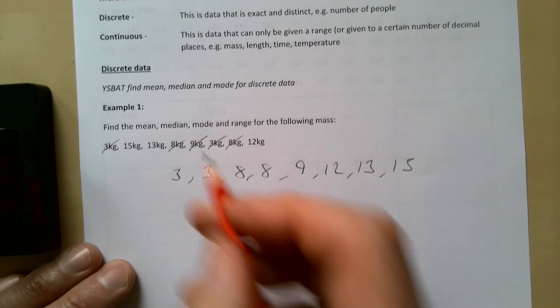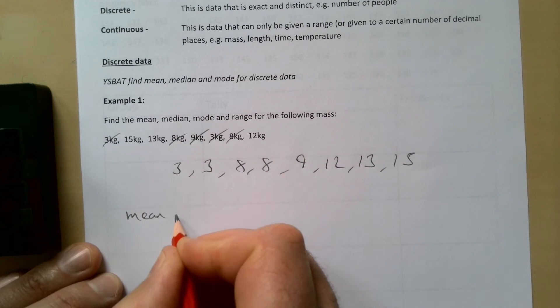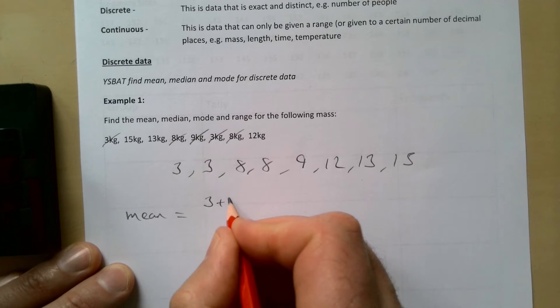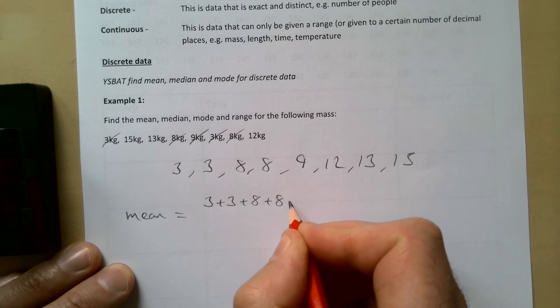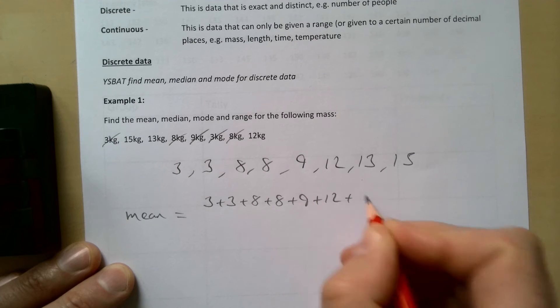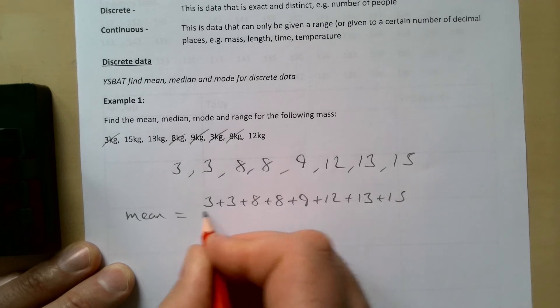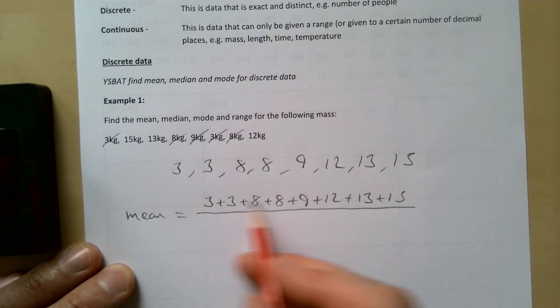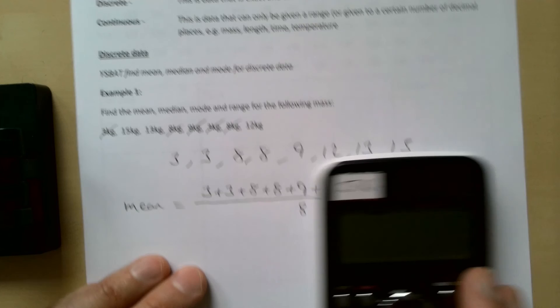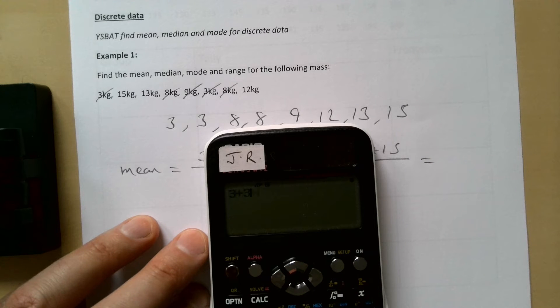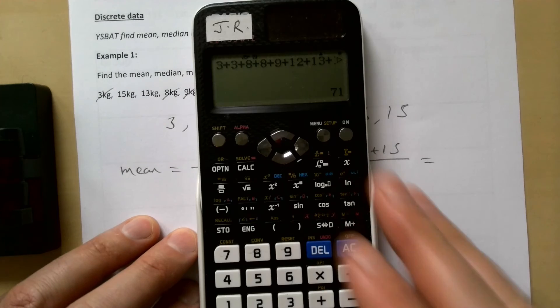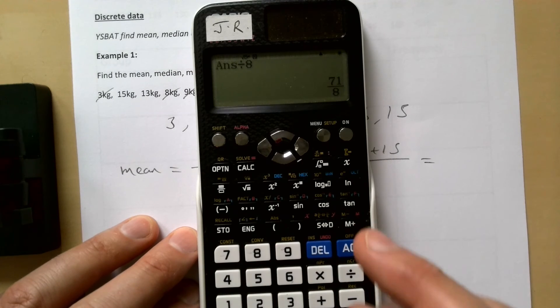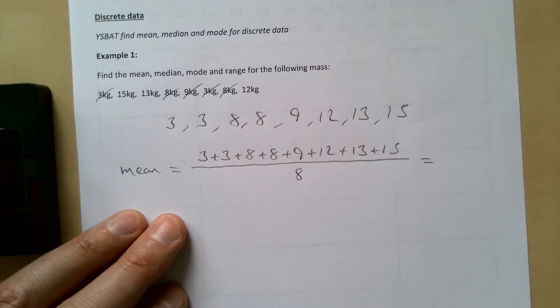First of all, I've asked us to find the mean, so I'm going to add them all up: 3 plus 3 plus 8 plus 8 plus 9 plus 12 plus 13 plus 15, and we're going to divide that by how many there are - 1, 2, 3, 4, 5, 6, 7, 8. So I'm going to add up to 71 and divide that by 8. It's going to be 8 and 7/8.